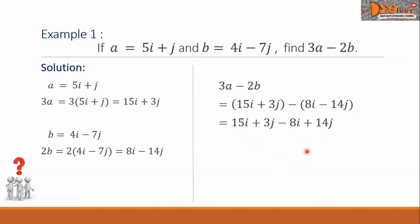Then, we combine similar terms. So, we have 15 minus 8 multiplied by i plus the quantity 3 plus 14 times j. So, the final answer is 7i plus 17j.